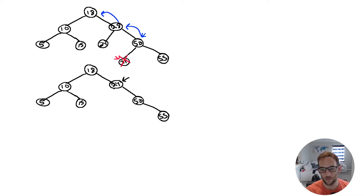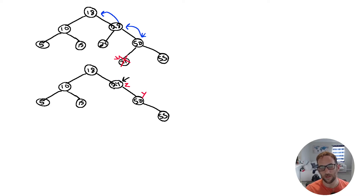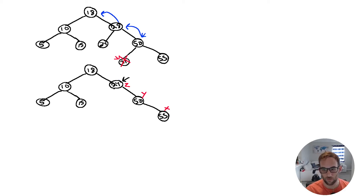Starting at the replacement node 24, we check balance. 24 has a left subtree height of 0 and right subtree height of 2; 0 minus 2 is negative 2 — not balanced. The first imbalanced node is Z. We take the child with the greatest height, which is 50 — that's Y. Then Y's child with the greatest height is 55 — that's X. This is a right-heavy single-line arrangement, so we do one left rotation.